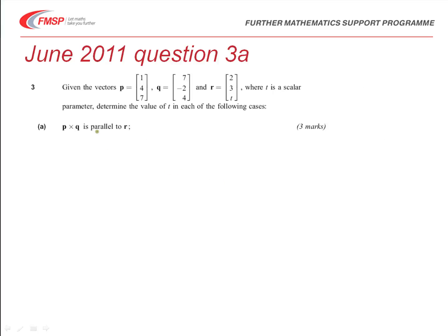Let's start off on the first part of this question then. We need to determine P cross Q to begin with. To get P cross Q, we can write this as a determinant of I, J, and K, with P and Q, so that's 1, 4, and 7, and 7, and negative 2, and 4.